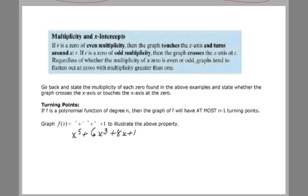If the zero has even multiplicity, if it repeats an even number of times, the graph touches the x-axis and turns around. If the multiplicity is odd, that means it occurs an odd number of times, then the graph is going to cross over the x-axis at that value.